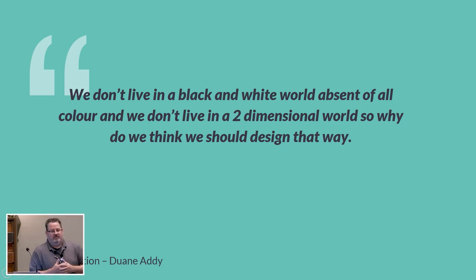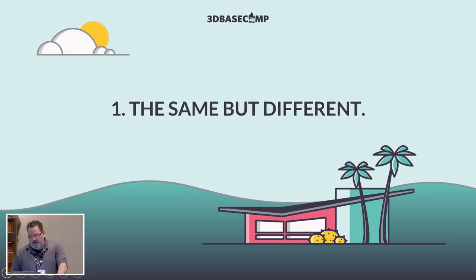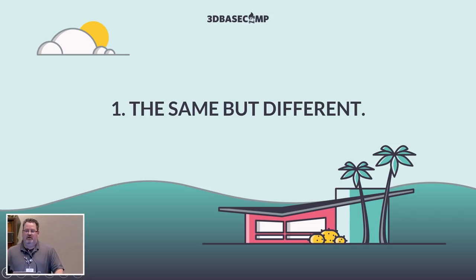Once we got the buy-in, the question became: why should we change? The biggest answer is — we don't live in a black-and-white world, and we don't live in a two-dimensional world, so why do we design that way? We'd had projects where we designed a beam location, the engineer came back with something massive, and it just didn't look right. The idea was: how do we design differently while delivering what SketchUp can bring forward?